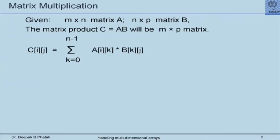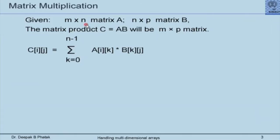For matrix multiplication, it is useful to teach students simple concepts. You have an m×n matrix and an n×p matrix; the matrix product A×B will be an m×p matrix, defined mathematically as C[i][j] = summation of A[i][k] × B[k][j] over k = 0 to n−1, where n is the common attribute between the two matrices. The number of columns of matrix A must equal the number of rows of matrix B, otherwise the matrices are not compatible for multiplication.